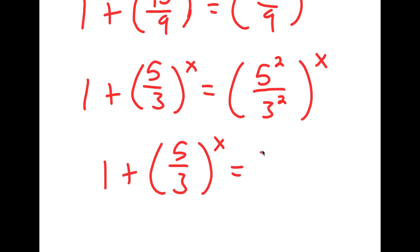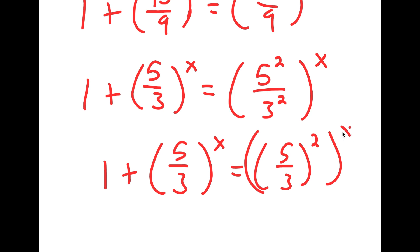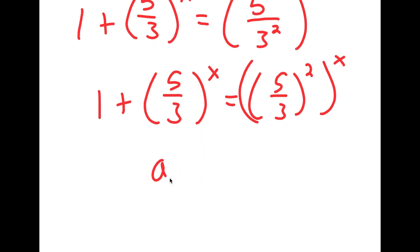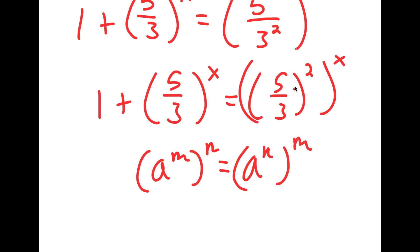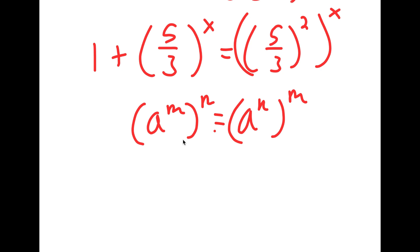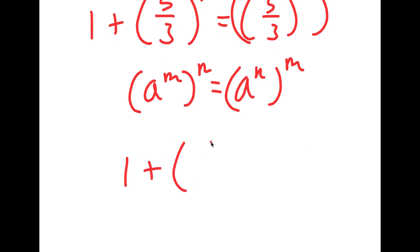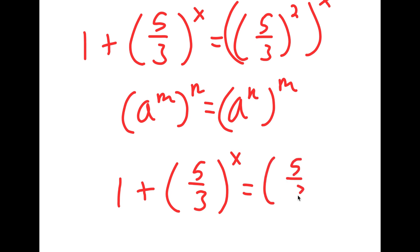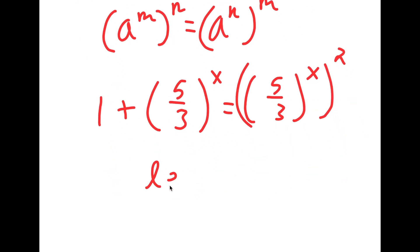So now 5 squared over 3 squared is going to equal 5 over 3 squared, to the power of x. If I have something in the form a to the power of m to the power of n, that's the same as a to the power of n to the power of m. So 5 over 3 squared to the power of x is the same thing as 5 over 3 to the power of x squared.